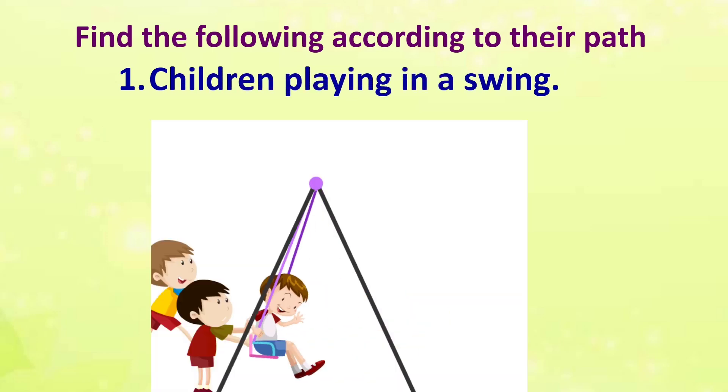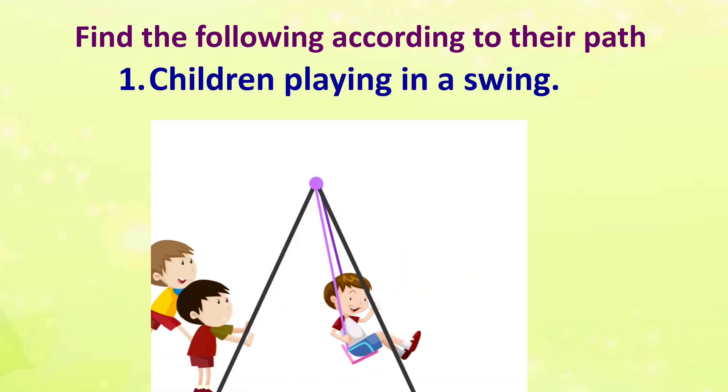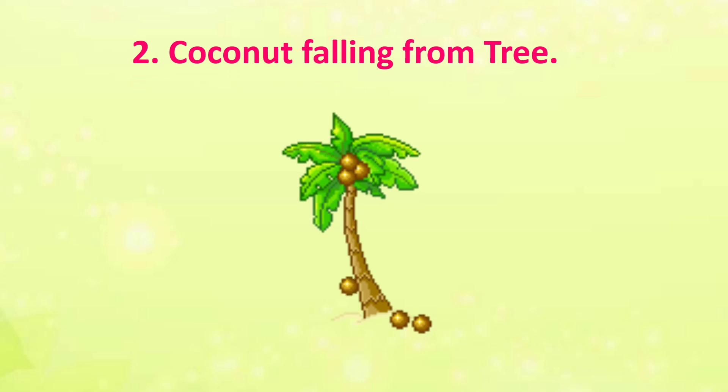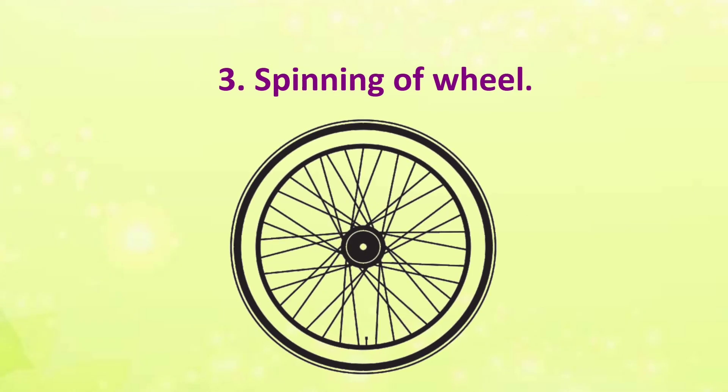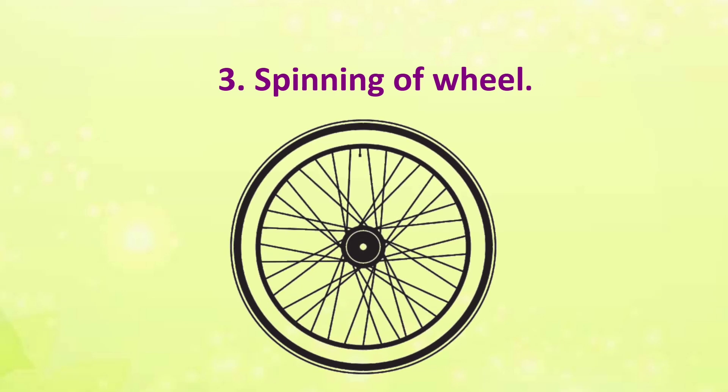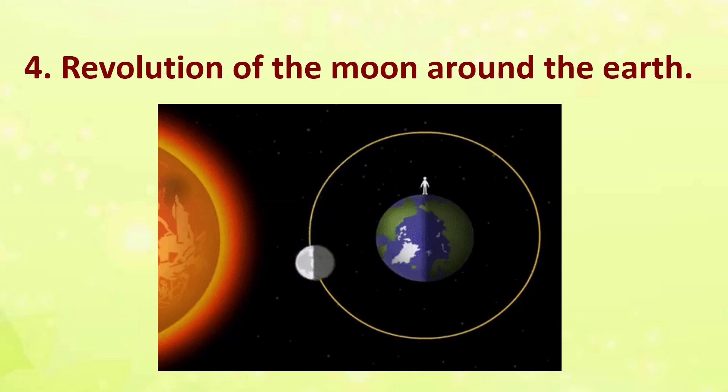Okay students, we have learnt the types of motion according to the path of the objects. Now find the motion of the following according to their paths: children playing on a swing, a coconut falling from a tree, spinning of a wheel, and the revolution of the moon around the earth. Thank you, children.